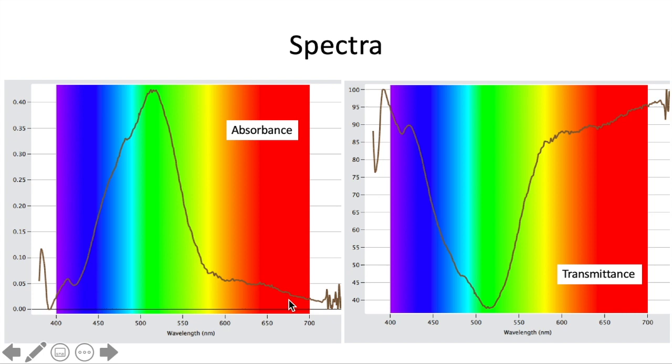So epsilon tells us how strongly the molecule absorbs a certain color of light. And it does vary depending on wavelength and depending on what kind of molecule you have. Different molecules will have different characteristic spectra. C is our concentration. It's measured in molarity. And L is the path length, or how far the light has to pass through the solution.